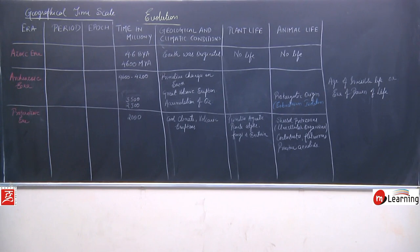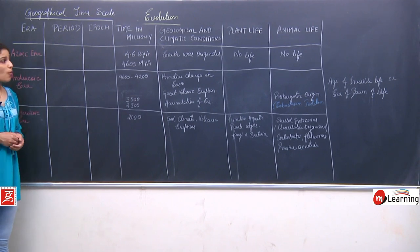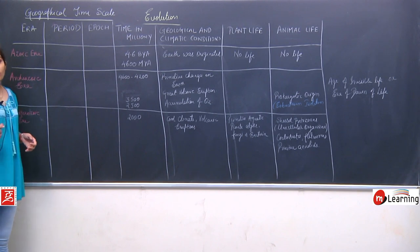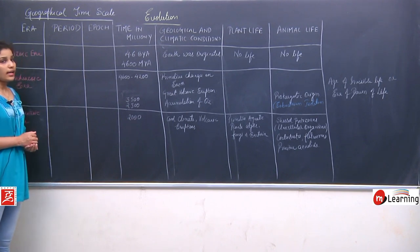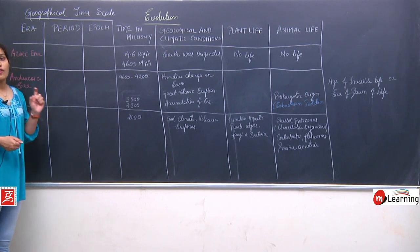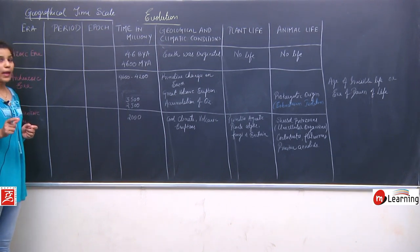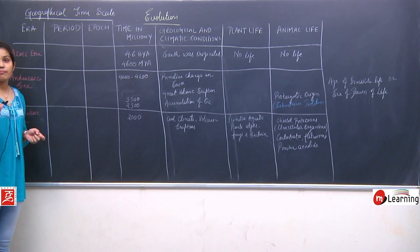To summarize the first three eras: the Azoic era had no life at all, originating 4.6 billion years ago. The Archaeozoic era, from 4600 to 3500 million years ago, saw primitive changes — torrential rainfall and the origin of complex and simpler organic compounds — with no plant or animal life yet.